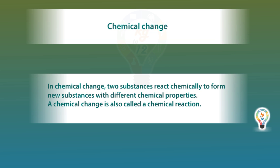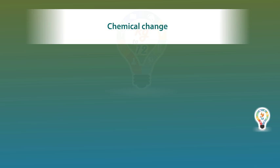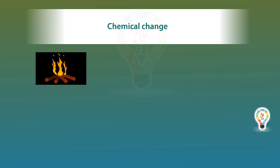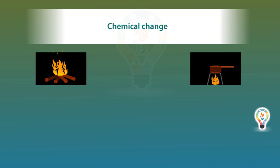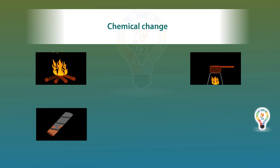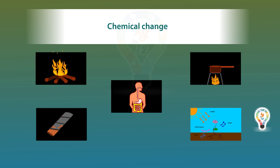In a chemical change, two substances react chemically to form new substances with different chemical properties. A chemical change is also called a chemical reaction. Examples are burning of fuel, cooking of food, rusting of iron, process of photosynthesis, digestion of food, etc.